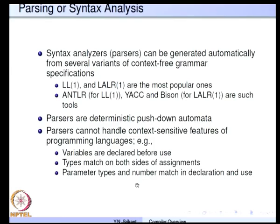Another important feature that cannot be captured in a context-free grammar is parameter type and number match in declaration and use. We declare a large number of parameters in functions, each with a type, and when calling that function we must supply actual parameters of the same type and the same number as in the declaration. Misuse of this property cannot be caught by a parser, and therefore semantic analysis is supposed to take care of it.